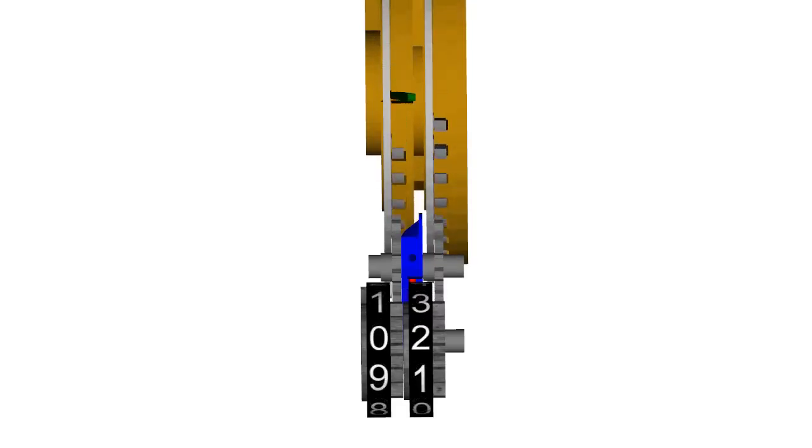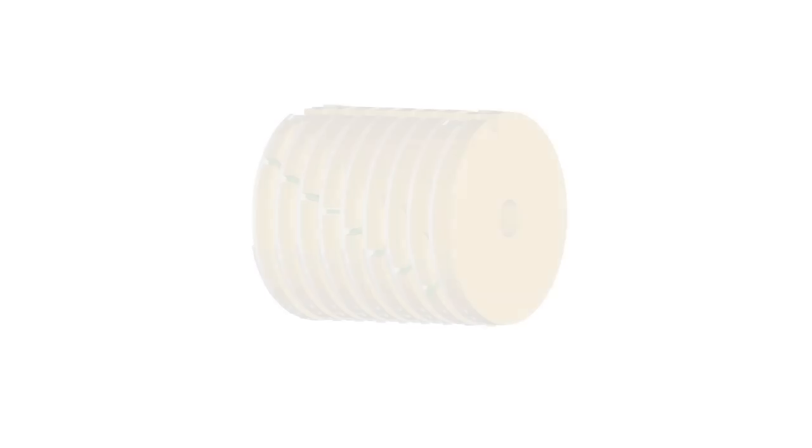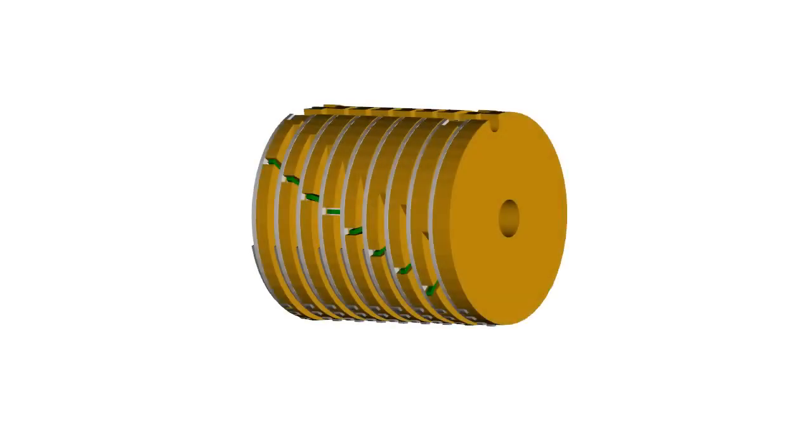When the carry sensing lever is in its forward position, the carry finger of the next higher rotor disc passes by uninterrupted and nothing happens. The location of the carry finger on each rotor disc is staggered to allow carry operations to ripple across the accumulator columns as needed.